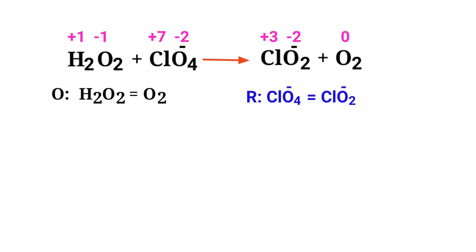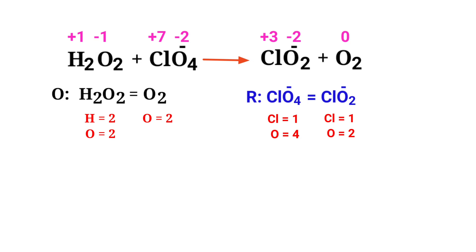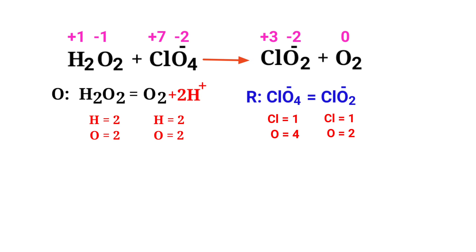Now balance the number of atoms in the two half reactions. In the oxidation half reaction, to balance the hydrogen atoms you can add H plus ions. The number of atoms are now balanced in the oxidation half reaction.